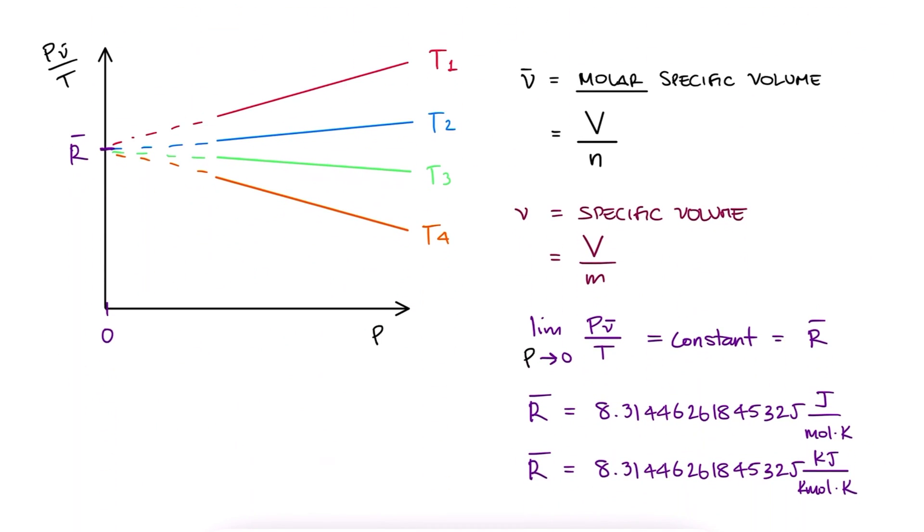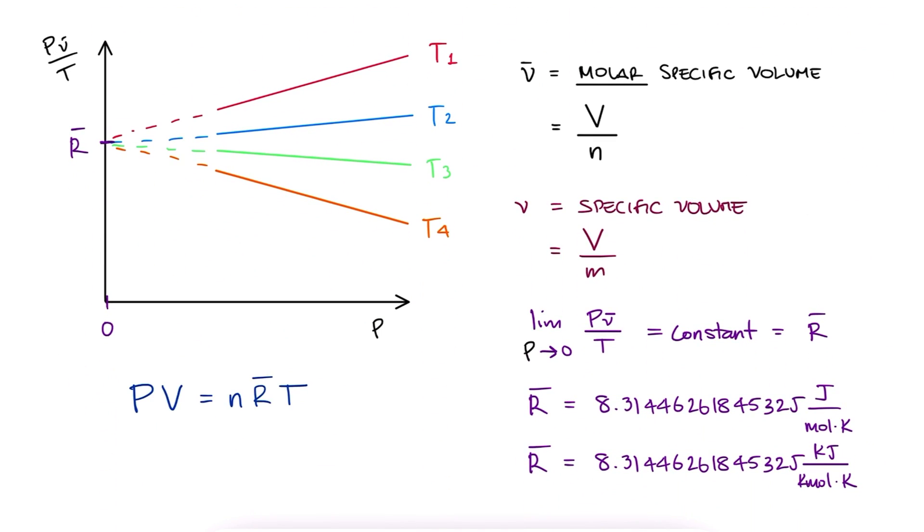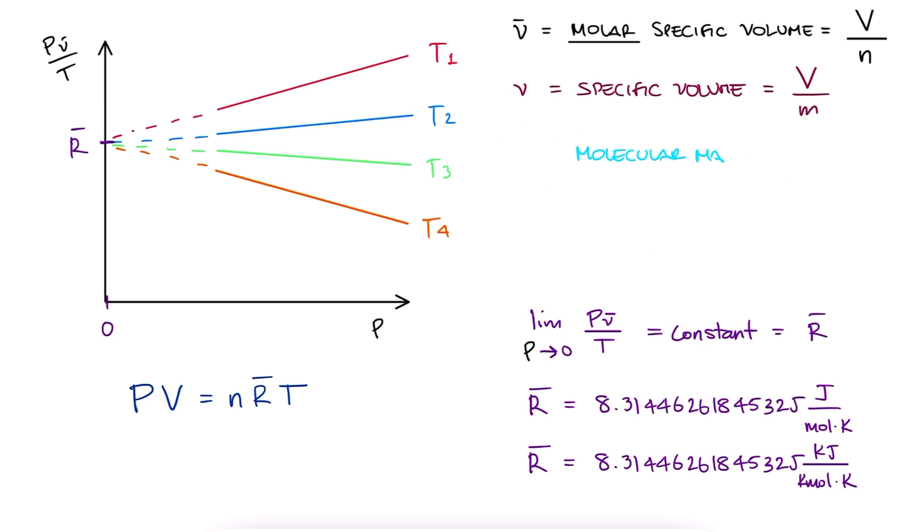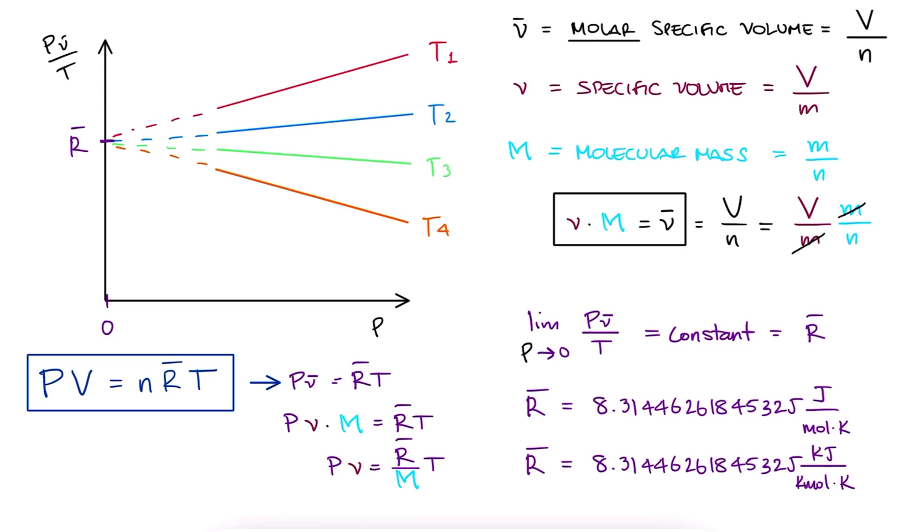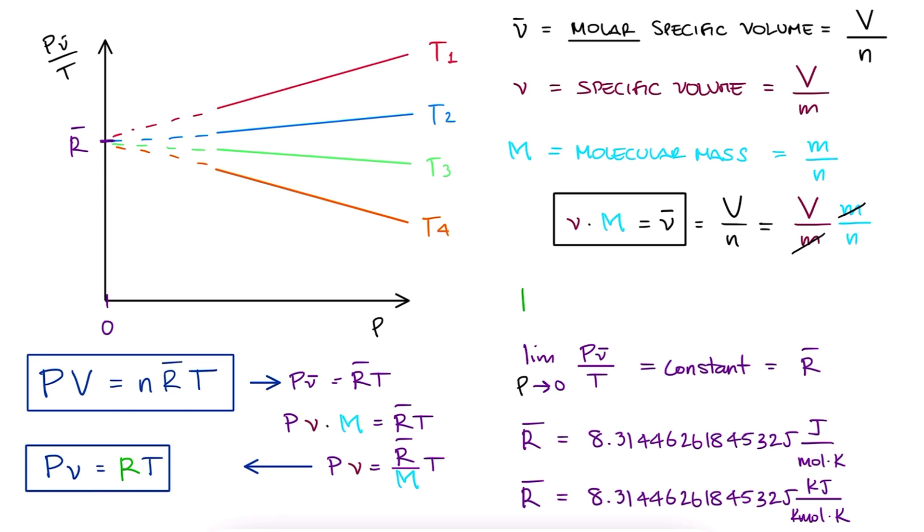Now remember that these temperatures must be in kelvin, not degrees Celsius, as kelvin is the absolute temperature. Since the molecular mass M can be written as the total mass of a substance divided by the number of moles, we could multiply the specific volume times M to get the molar specific volume. We can therefore substitute V bar by V times M to get PVM equals R bar T, which can be rearranged as PV equals R bar over M times T, which is helpful because we can define R, the gas constant, as R bar over M.